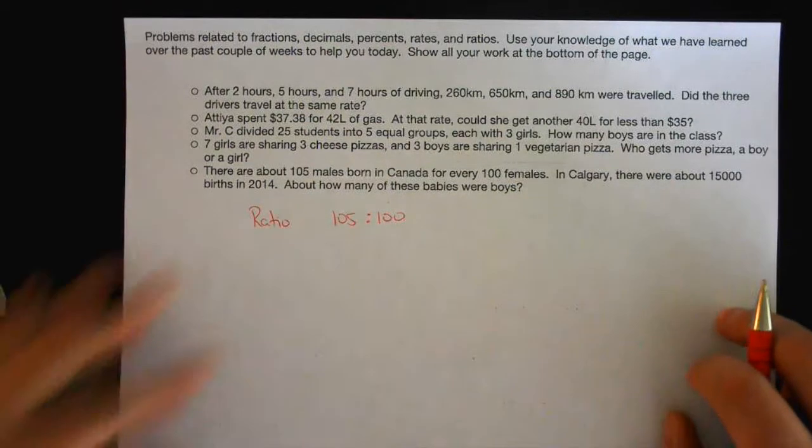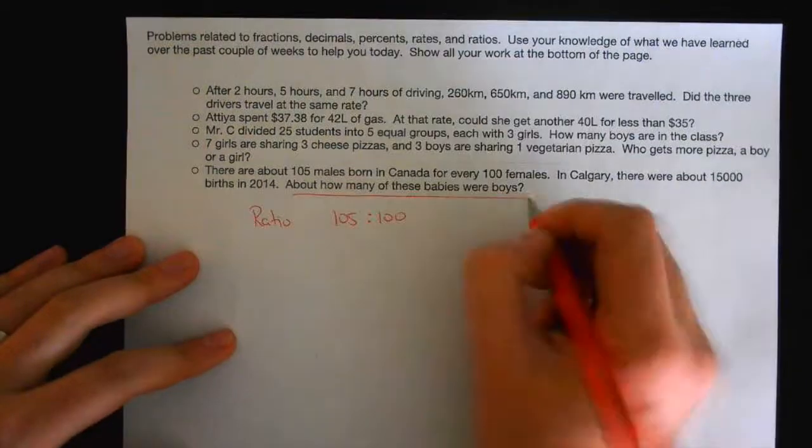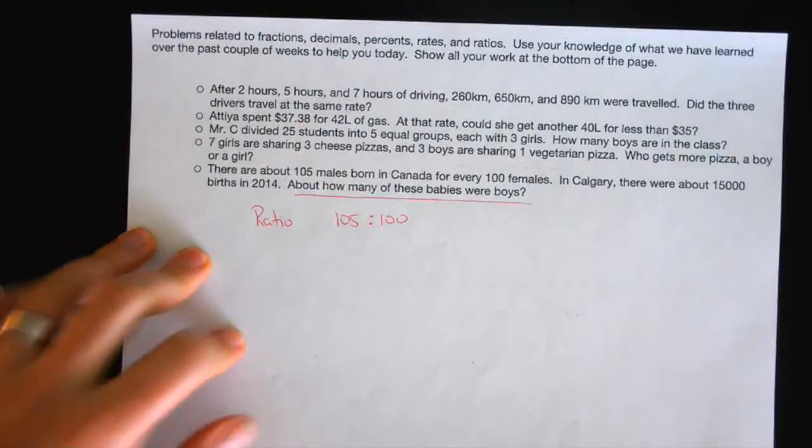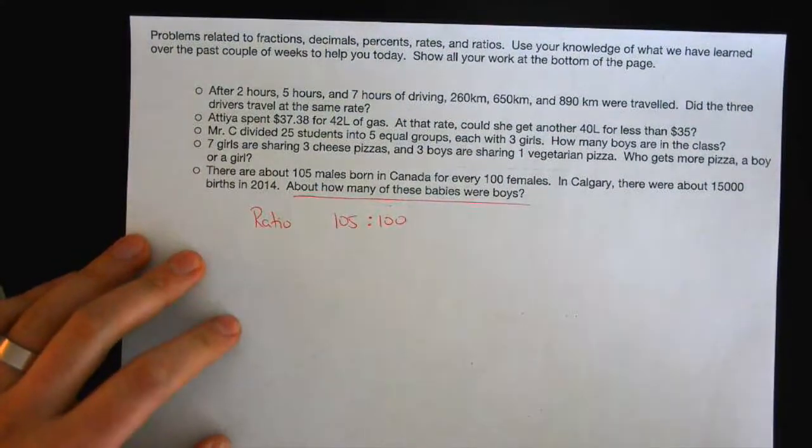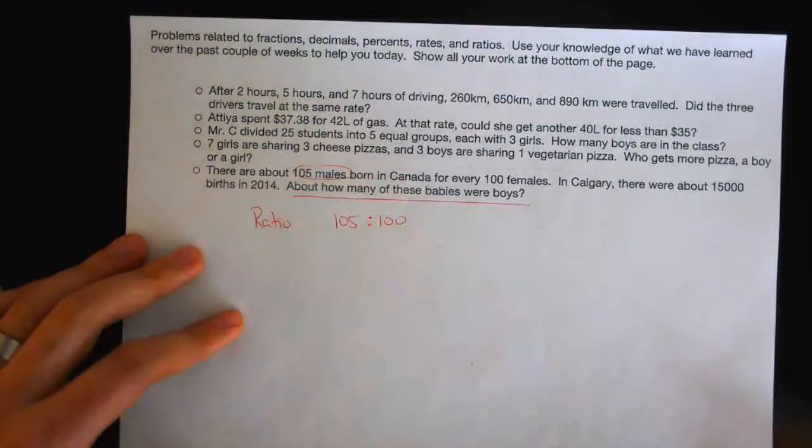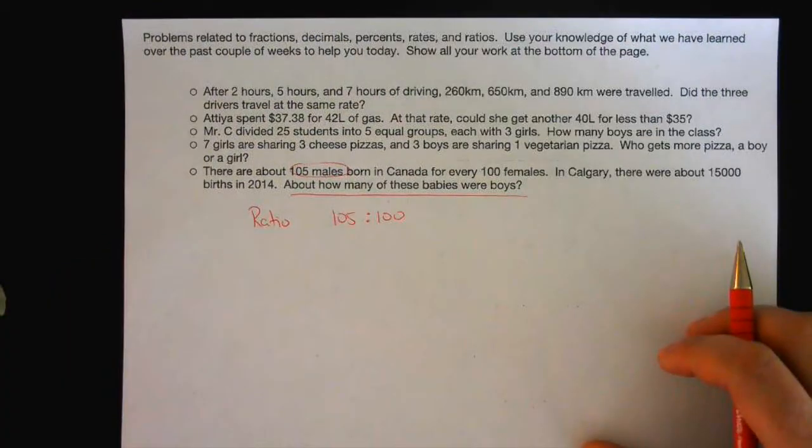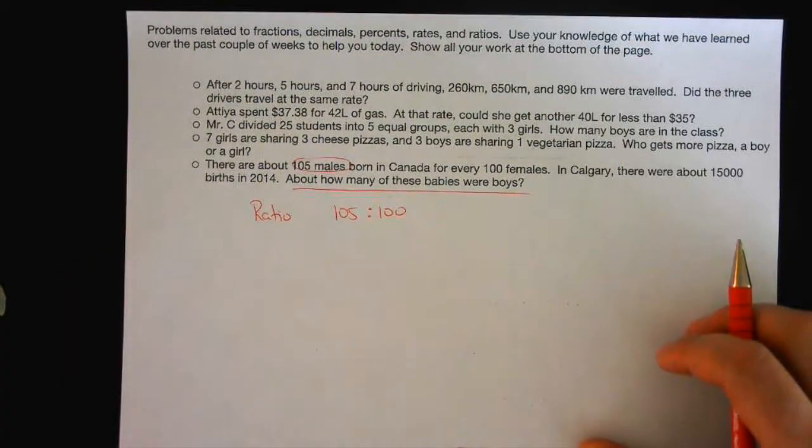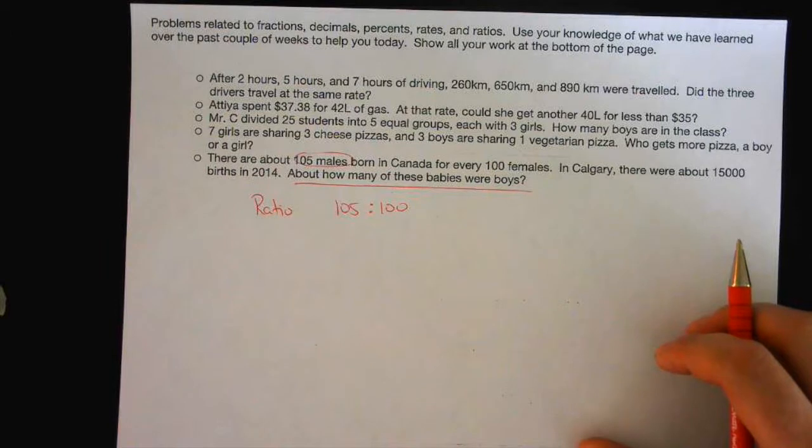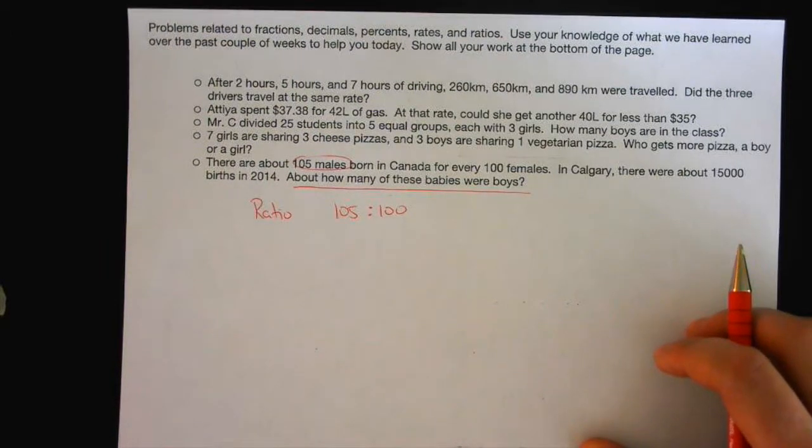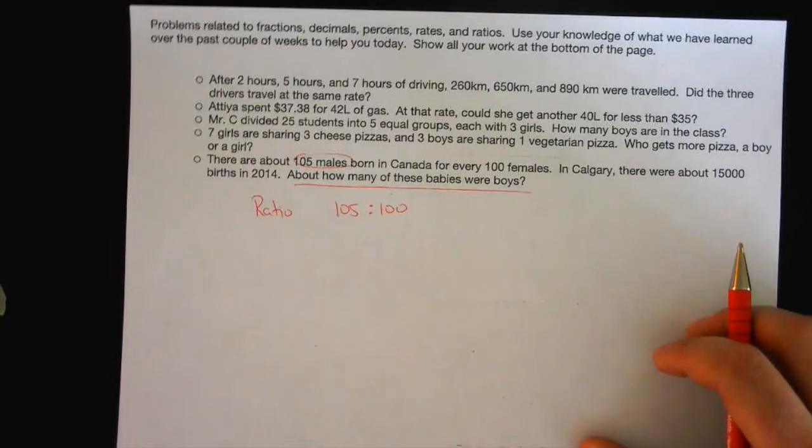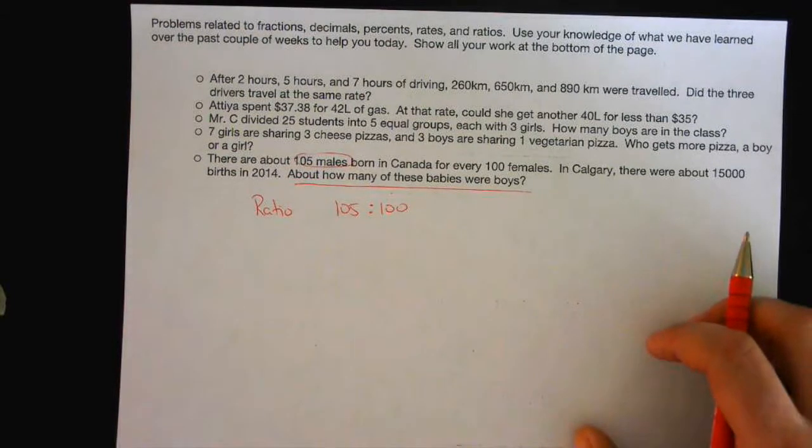How many boys were born, right? So here we have 105 boys or males, whatever. Same thing, right? What do I do now? I know 105 males are born for every 100 girls. Got the ratio? What do I need to do now?